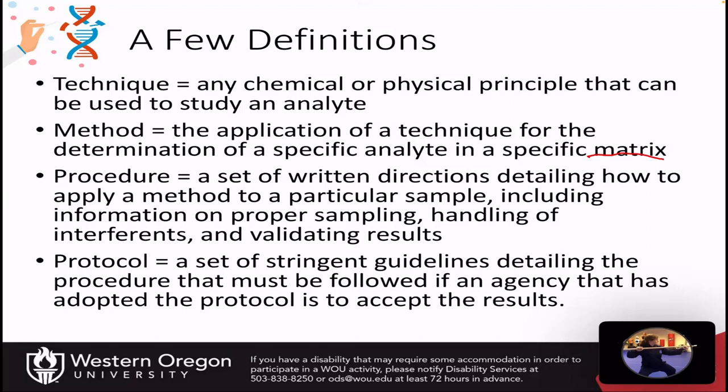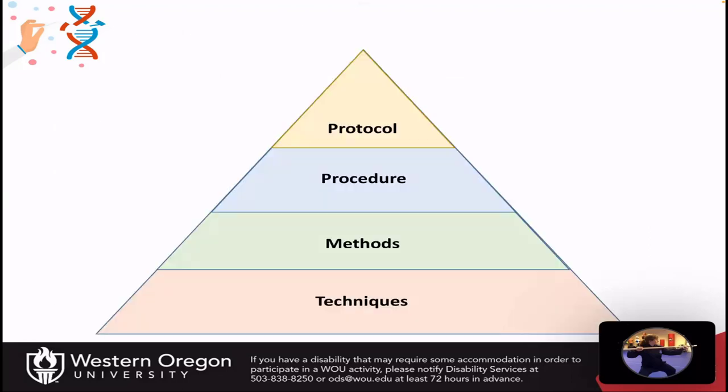A procedure is the set of written directions detailing how to apply a method to a particular sample, including information on proper sampling, handling of interference present in your matrix, and for validating the results. The protocol is the top of the pyramid — a set of stringent guidelines detailing a procedure that must be followed if an agency that has adopted the protocol is to accept the results. The hierarchy runs from technique at the base, to methods, to procedure, and if robust enough, the procedure can be adopted by an agency as a detailed protocol.